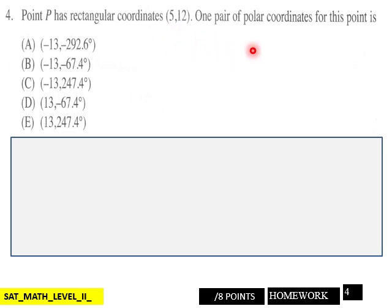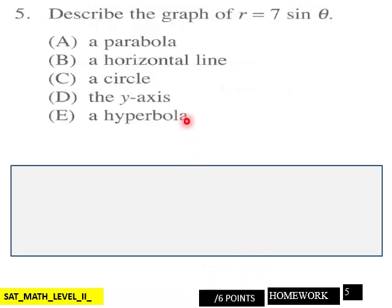Here's your choices here for that, and this is eight points for page four. Page five: describe the graph of r equals 7 sine theta, six points.